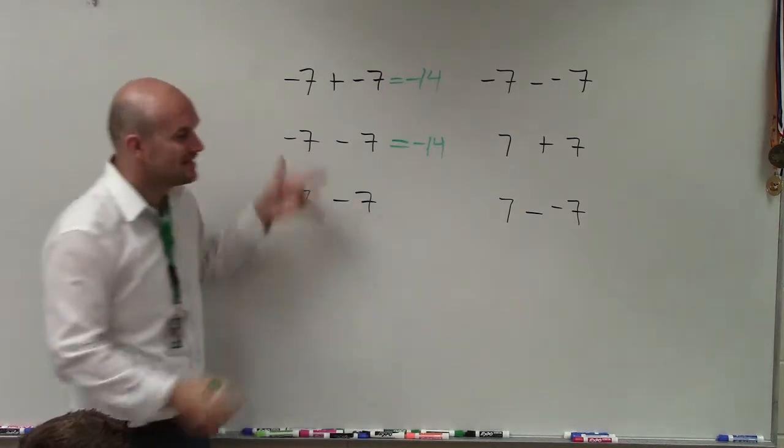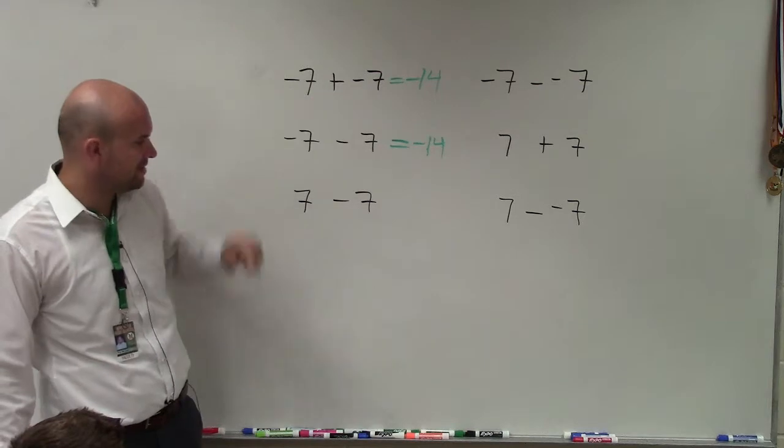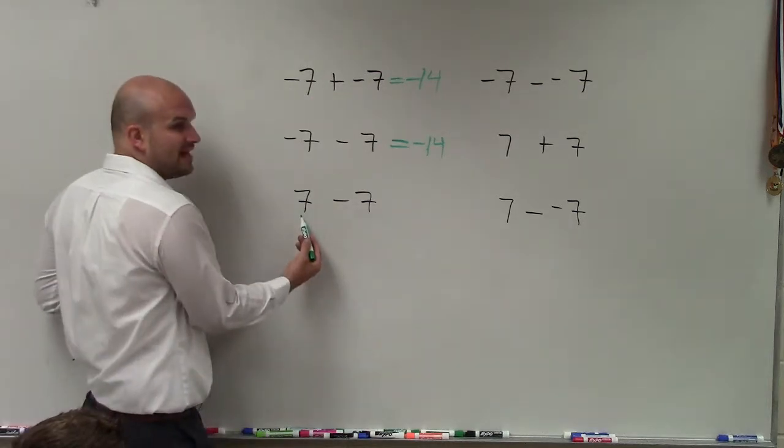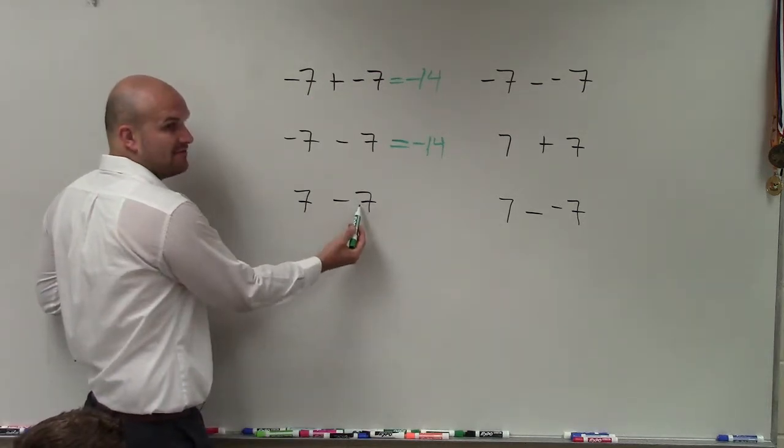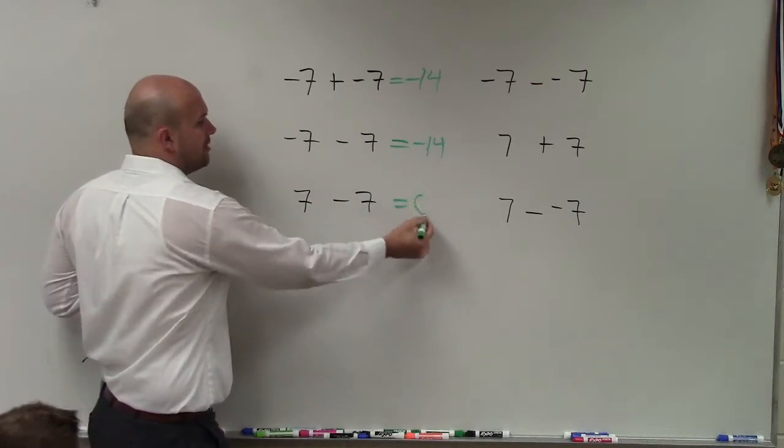What I want you guys to understand is, you guys can see these are the same thing. The subtraction problem was just rewritten as an addition problem over here. Obviously, if you have $7 in your pocket and you owe somebody $7, you pay them off. So therefore, you have a net total of 0.